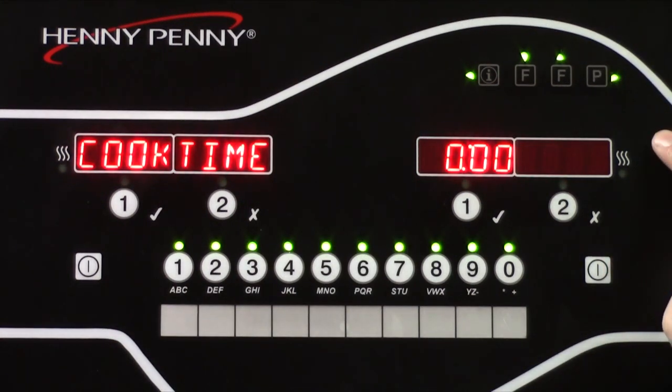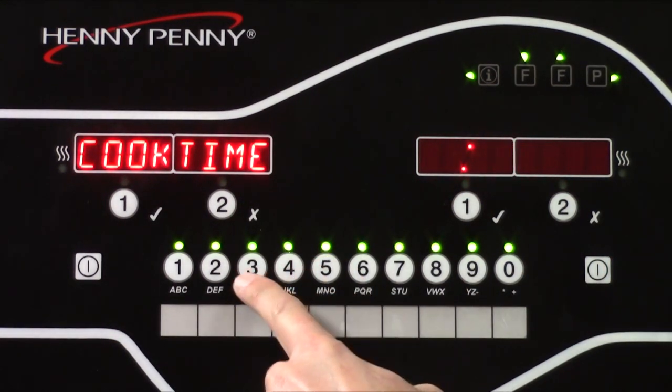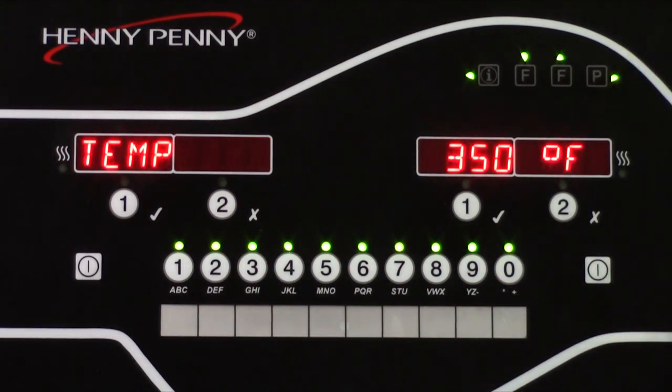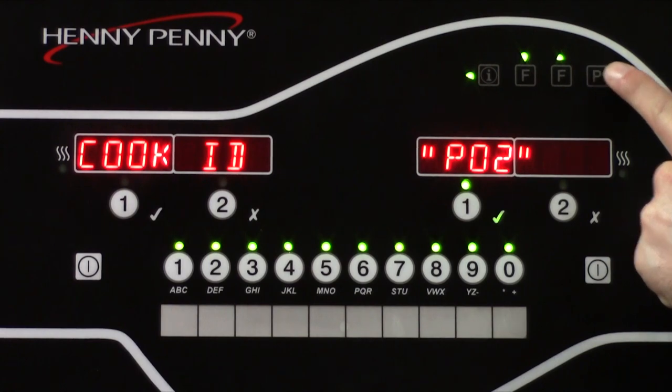Press the P program button again and now enter the cook time. Our temperature is already set to 350 degrees, so we can scroll to the next step.